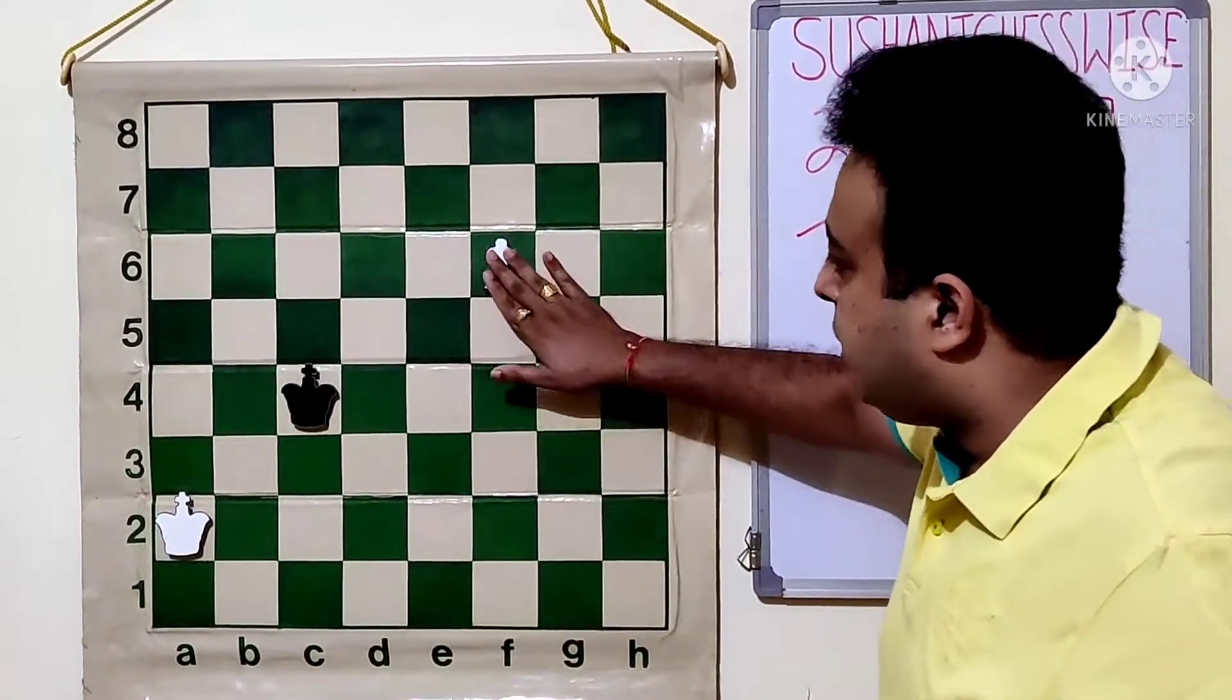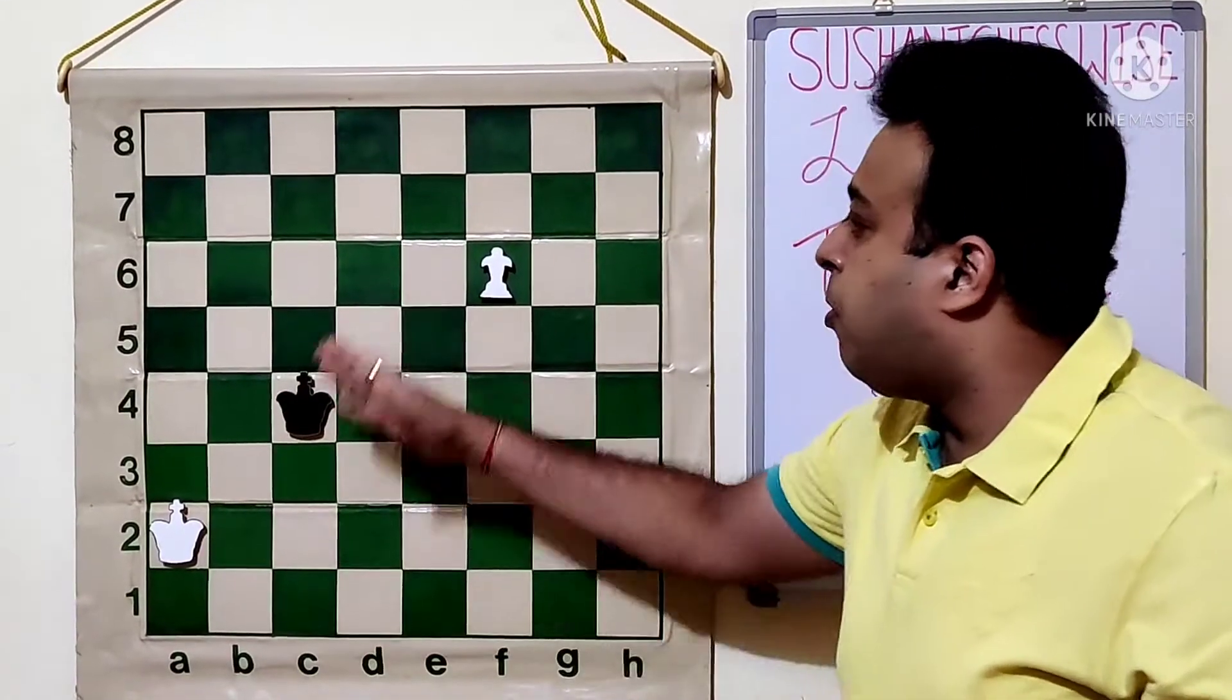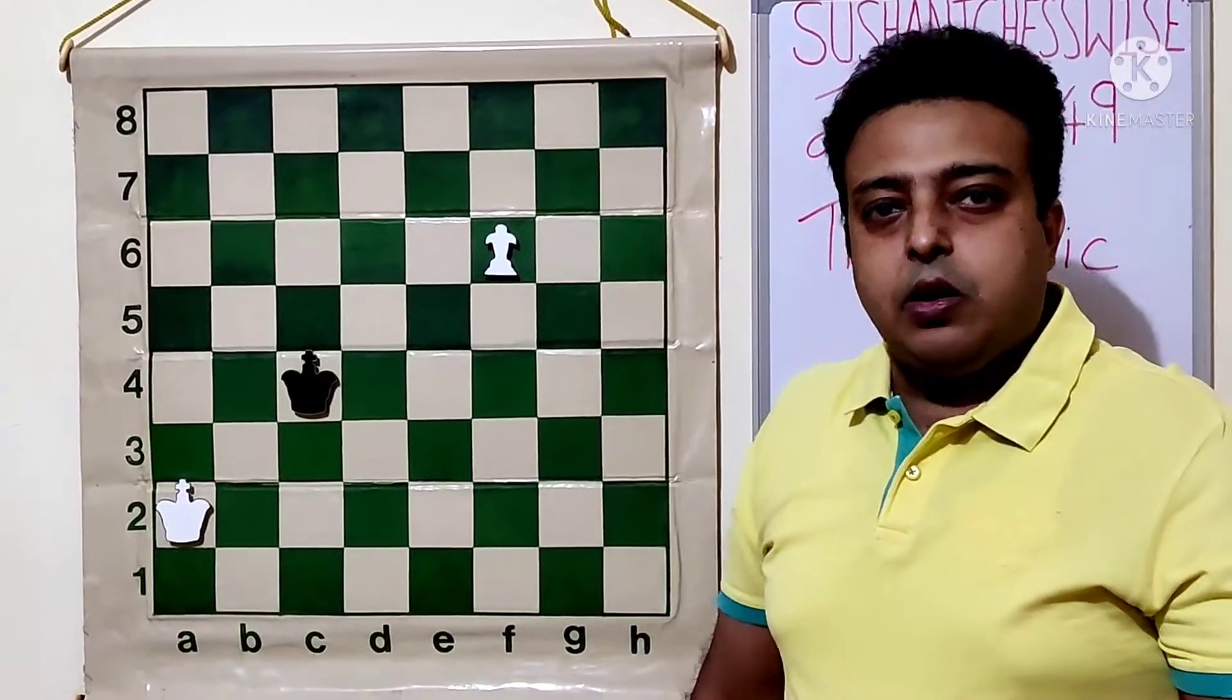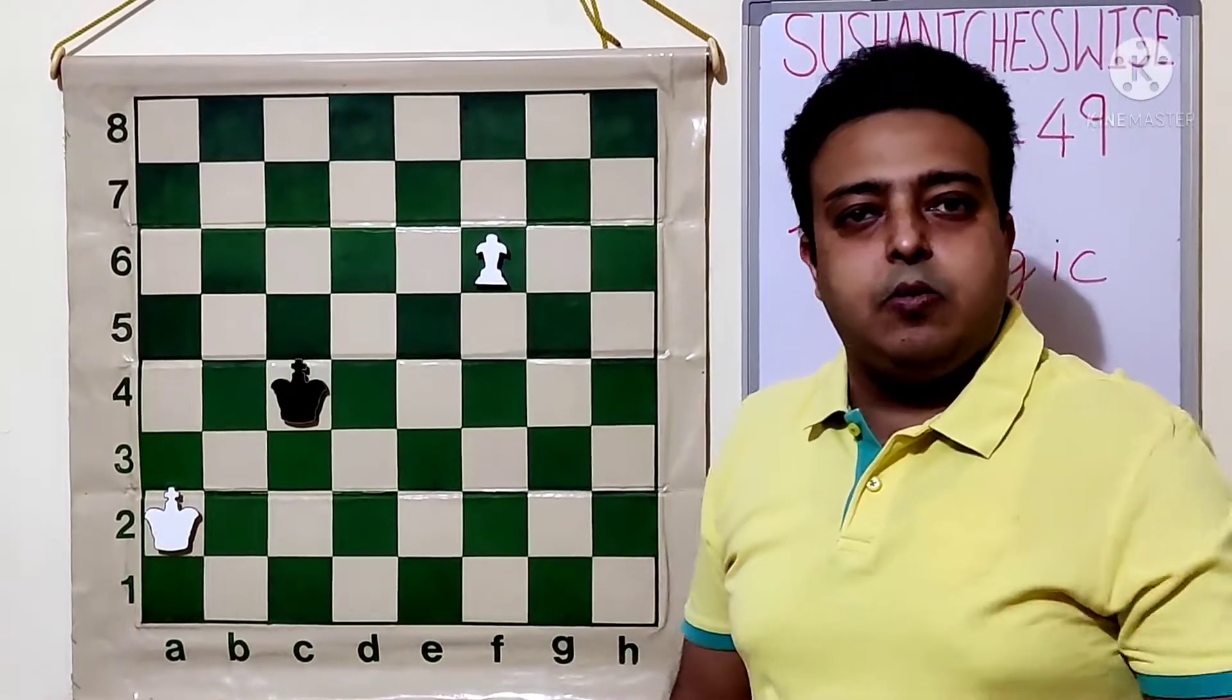So this is how we come to know. Of course this is only related to pawn and king. If other factors are there, our king is blocking the opponent's king and such factors, then it will not work. It is only related to pawn and the king. Let's look at some more examples.